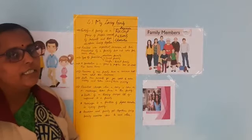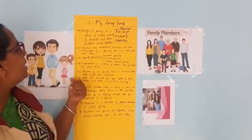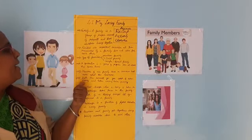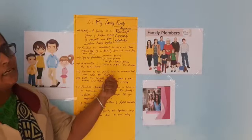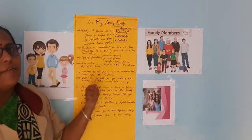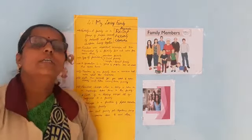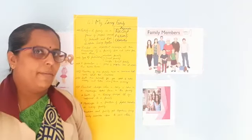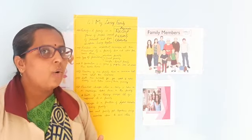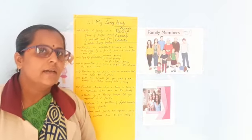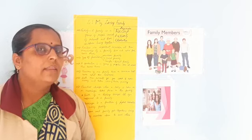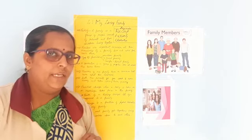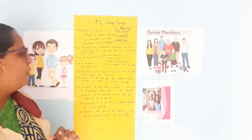Next, we have learnt surname. What is a surname? Members of one family have a common last name called the surname. Everyone of us has our own surname — that is a family surname. For example, we have Gupta, Rao, Shah, Singh, Khan. These are all surnames of the members of their own family.